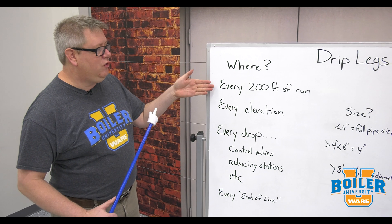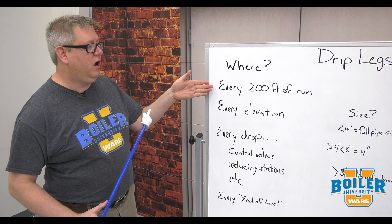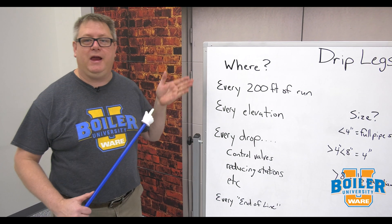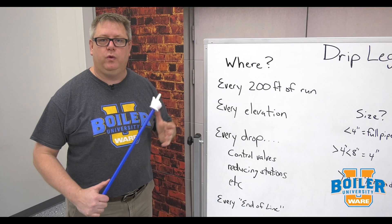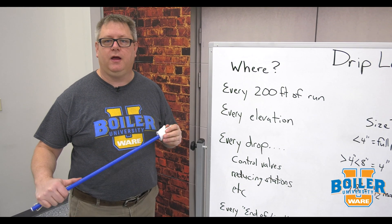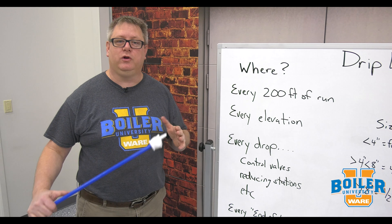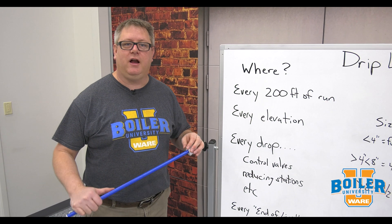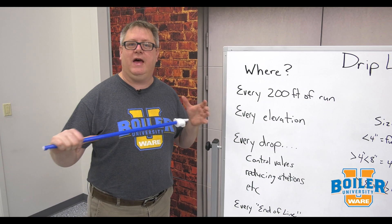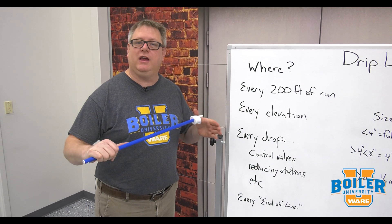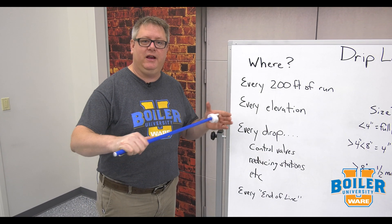First, every 200 feet of steam main run we want a drip leg, and that's because we're generating condensate in that run and we need to get rid of it at intervals.